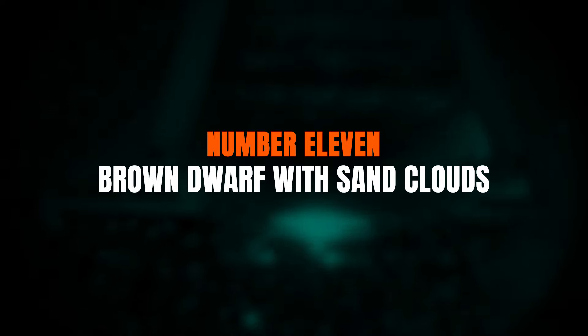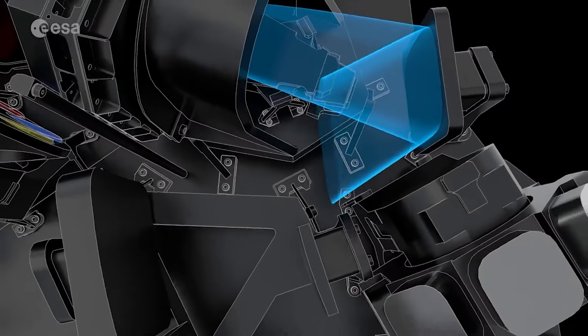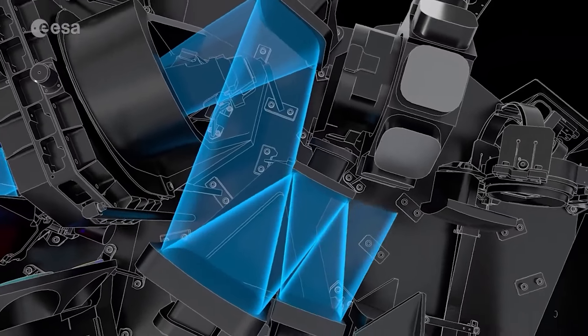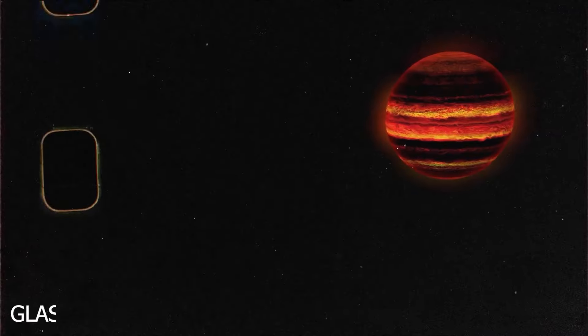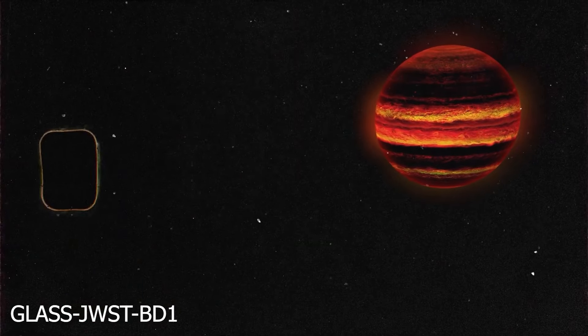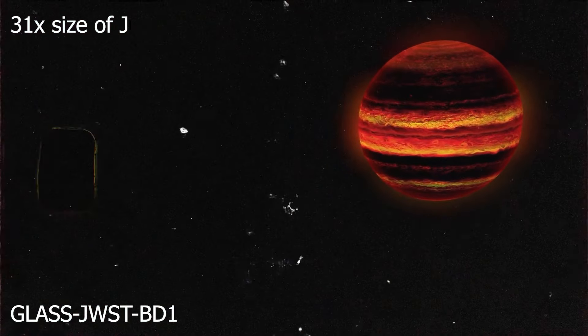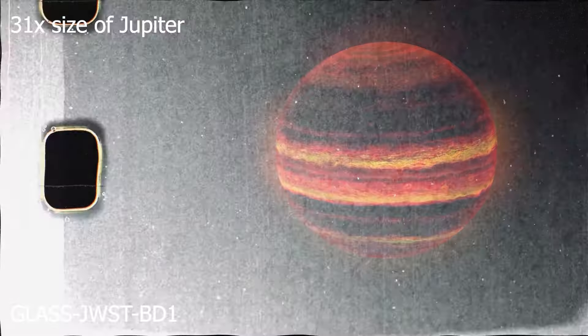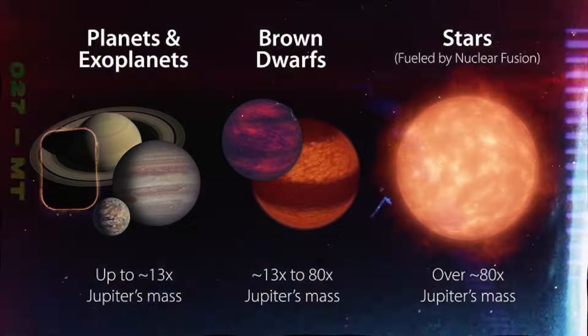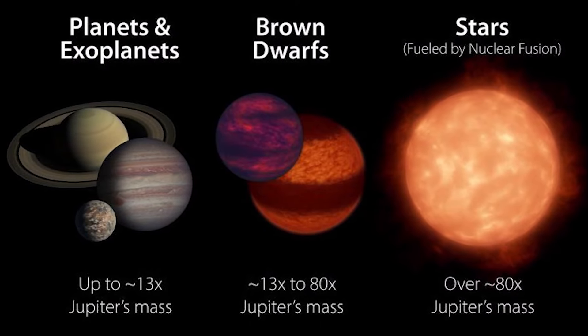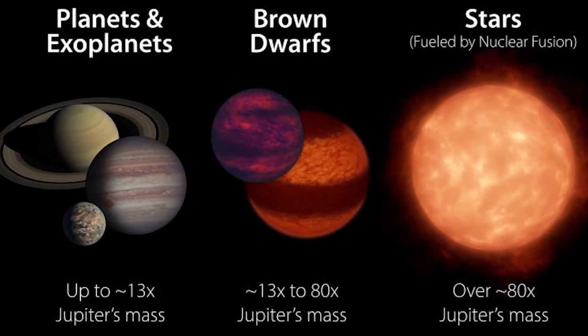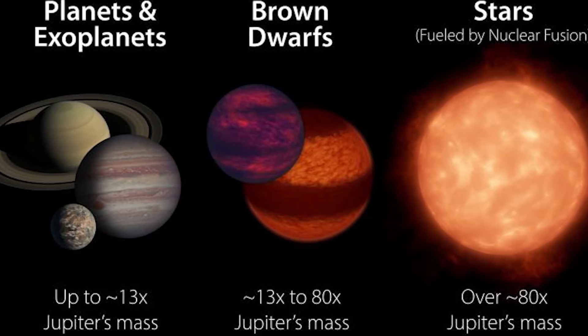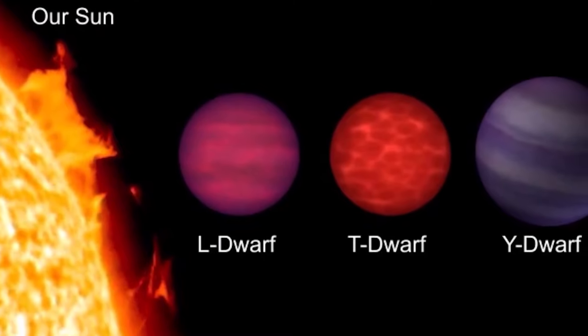Number 11. Brown dwarf with sand clouds. Did you know that the JWST wasn't actually designed to find exoplanets? But guess what? It stumbled upon something even more fascinating. Meet VHS-1256b. Unlike traditional planets, VHS-1256b is actually a brown dwarf, a celestial oddity. It's larger than planets yet too small to be a star, emitting a dim reddish glow.